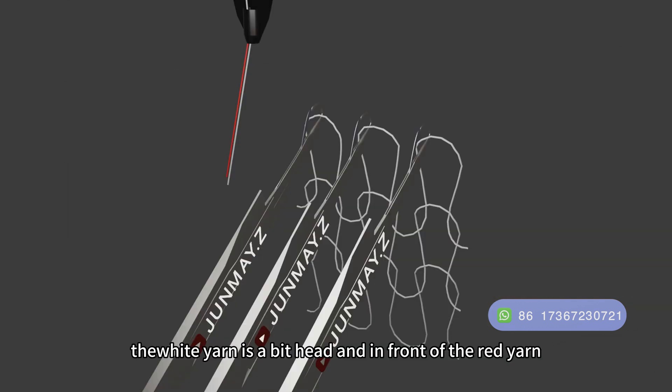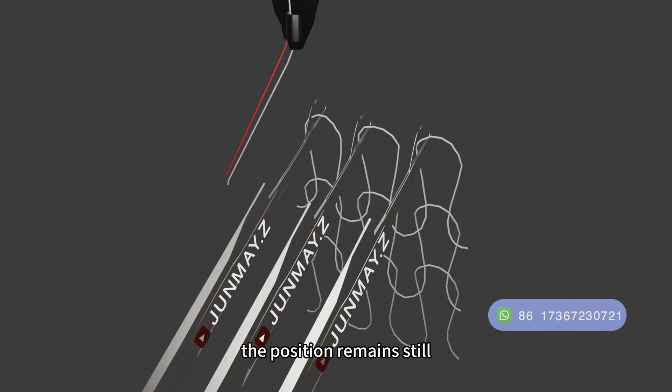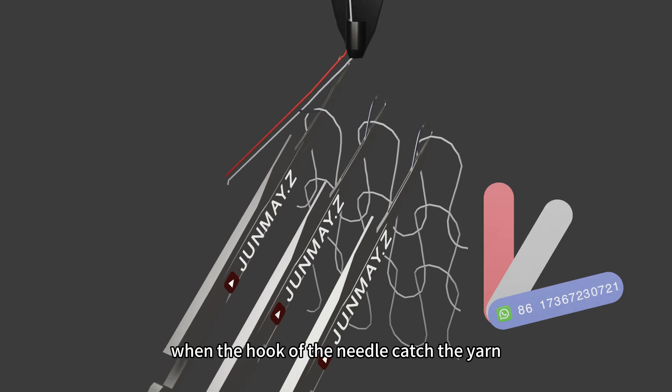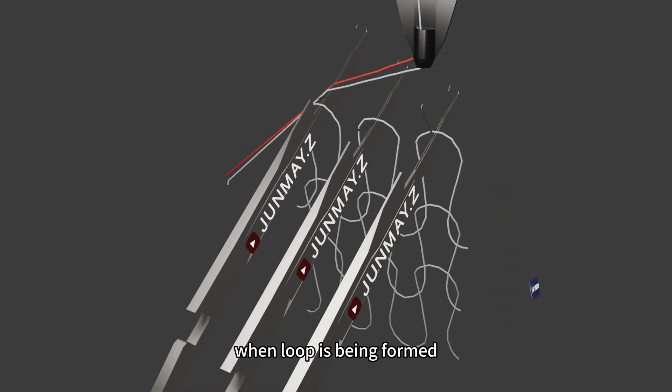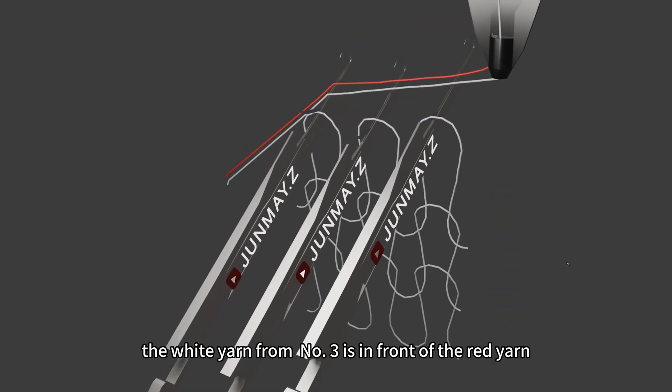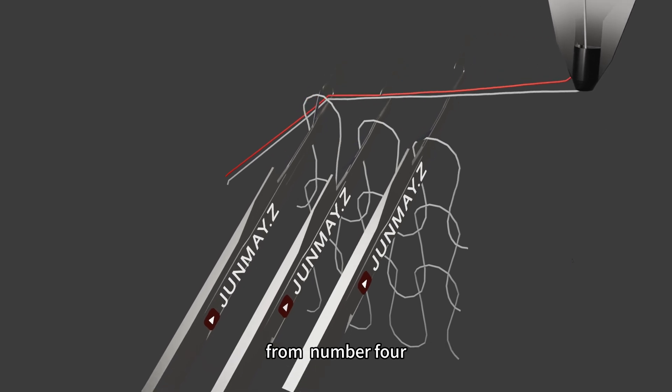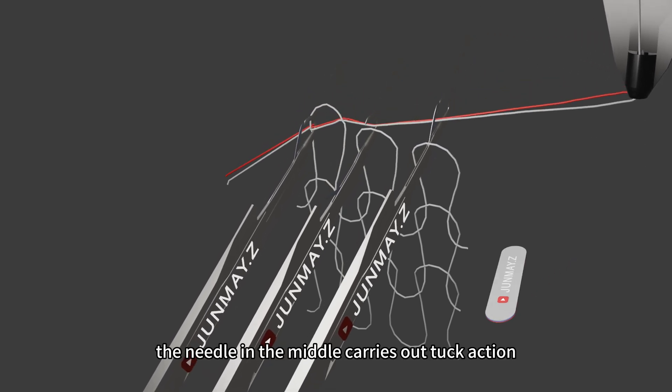The white yarn is a bit ahead and in front of the right yarn. The position remains still when the hook of the needle catches the yarn. When loop is being formed, the white yarn from number three is in front of the right yarn from number four. The needle in the middle carries out the target action.